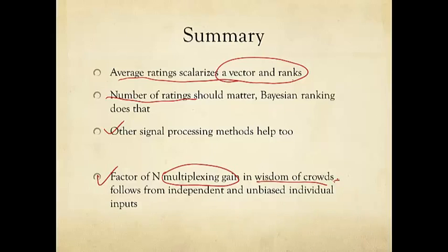This is just a fuzzy English phrase. So one particular quantification in an unambiguous language is this factor of n, multiplexing gain. From what we saw in Galton's example, is that it follows from independent and unbiased individual inputs. They can be wrong, but as long as they're wrong in independent ways, then for a large enough sample size, we will see this factor of n gain. And we'll later see other types of wisdom of crowds.